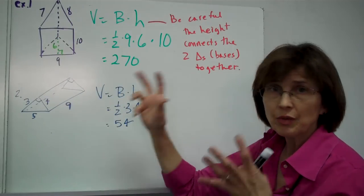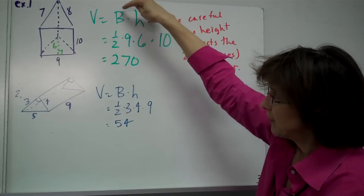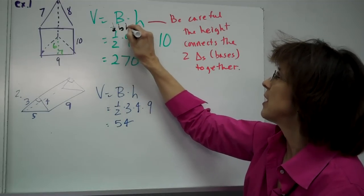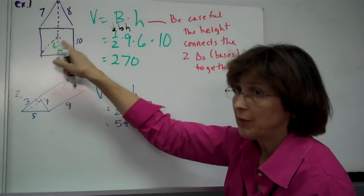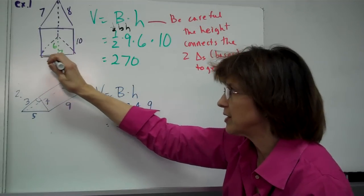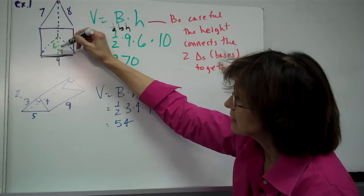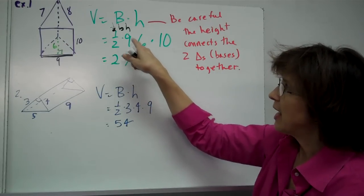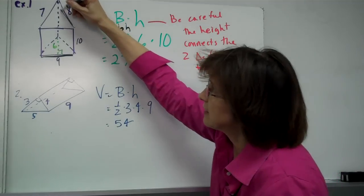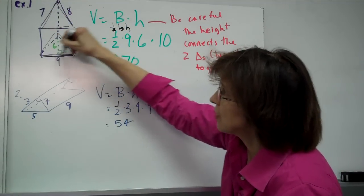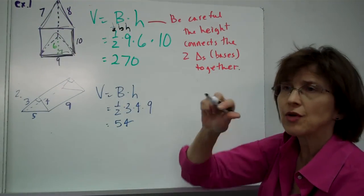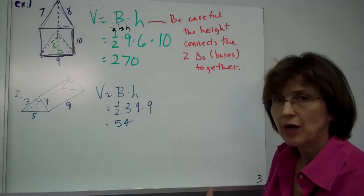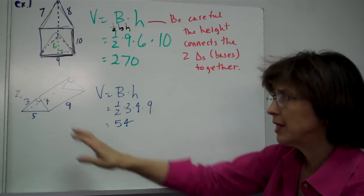Let's follow it through. The big B is one half the base times the height of the triangle. The base of the triangle is nine, and the height — that's a box, not a seven — is going to be six. It's that dotted line. So it's one half nine times six. The height of the whole prism is the number that connects this triangle to this triangle, and that number is ten. When you do the math, it's 270. I'm not worried about units right now — just focus on the numbers and which numbers to use.